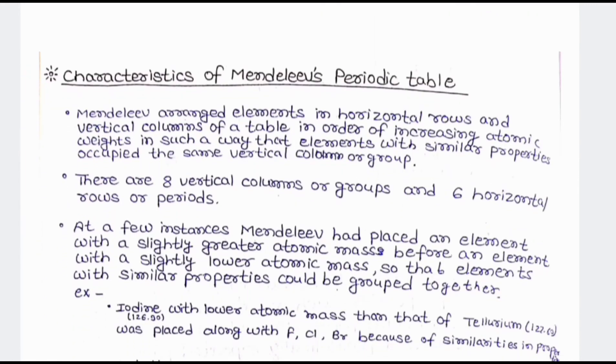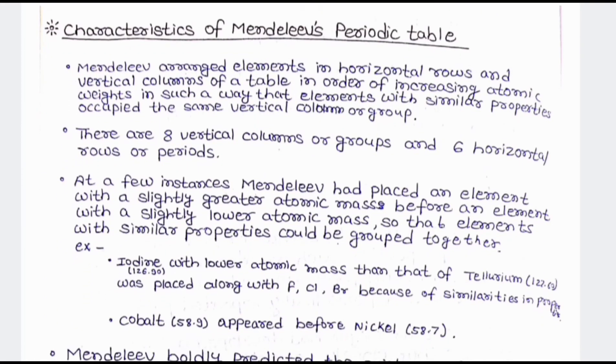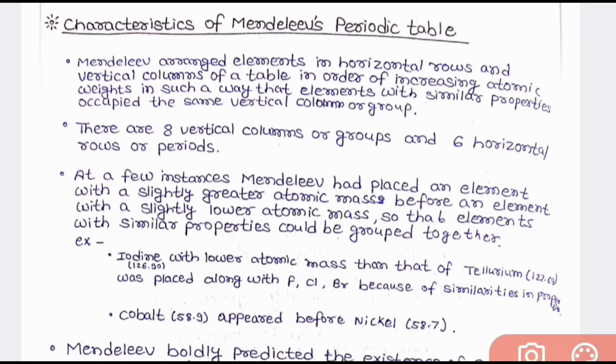Now let us come to characteristics of Mendeleev periodic table. And the characteristics of the Mendeleev periodic tables were Mendeleev arranged elements in horizontal rows and vertical columns of table in order of increasing atomic weight in such a way that elements with similar property occupied the same vertical column or group. The second characteristic was there were eight vertical columns or groups and six horizontal rows or periods.